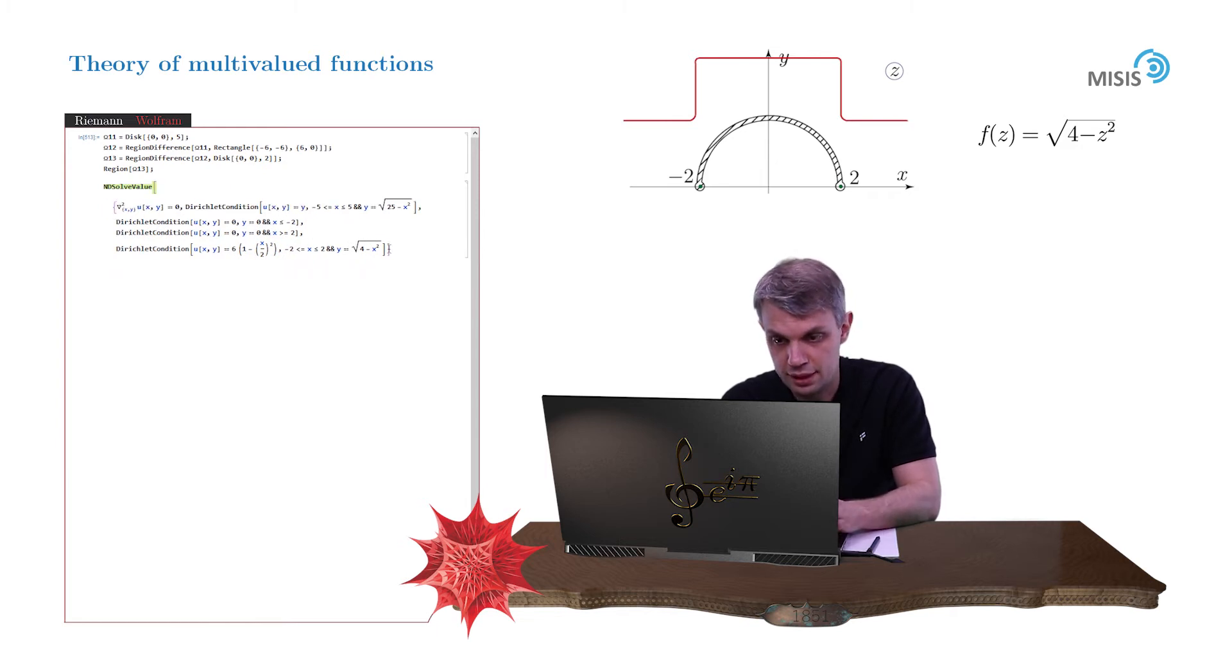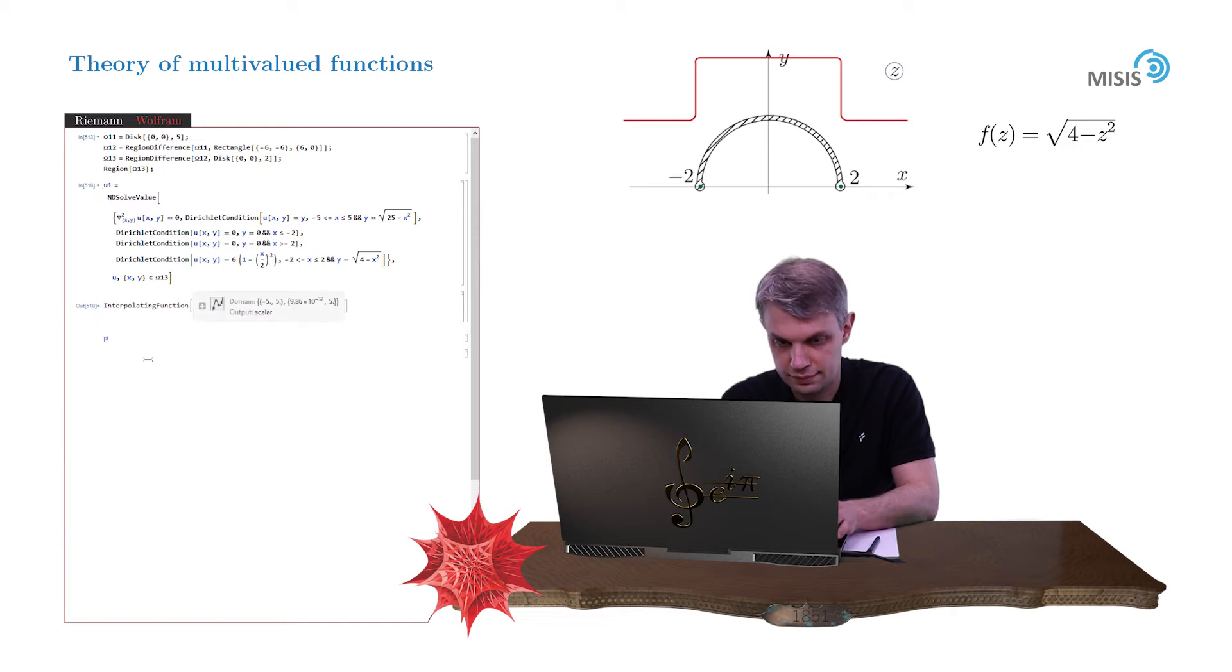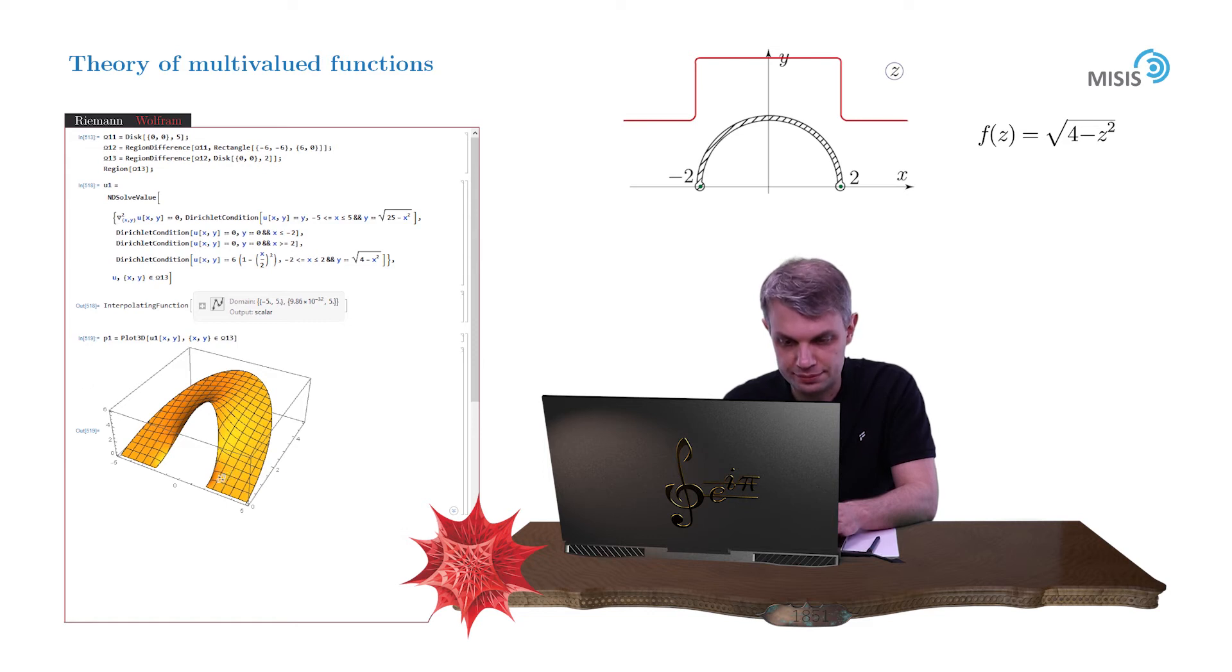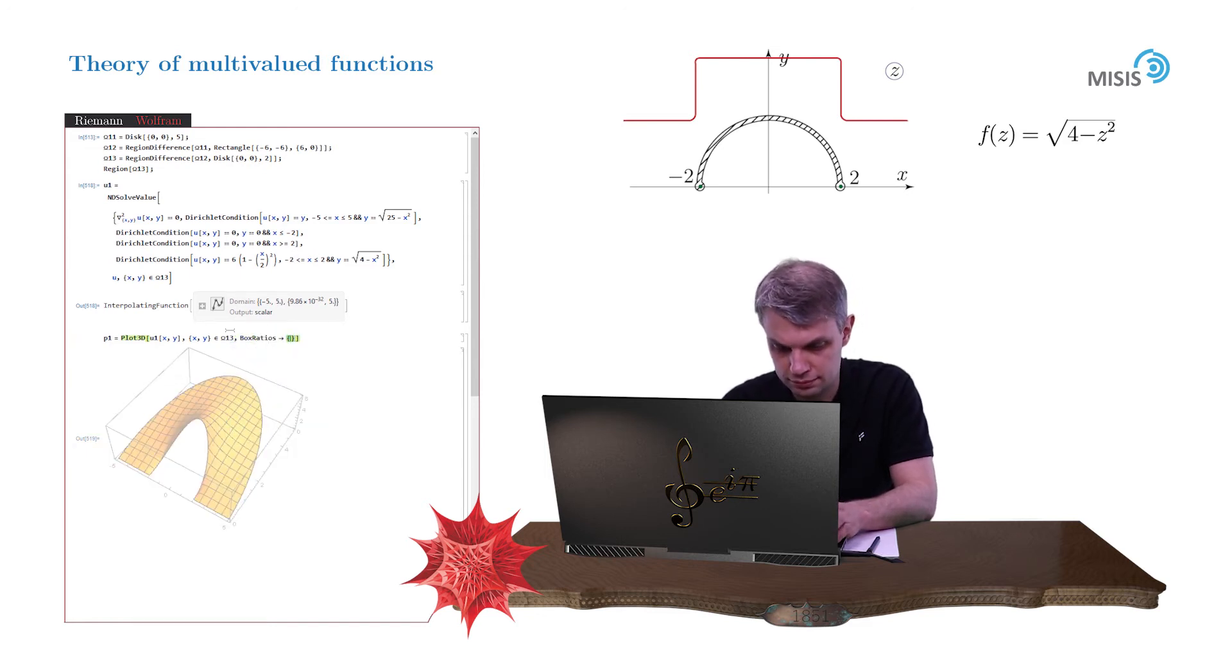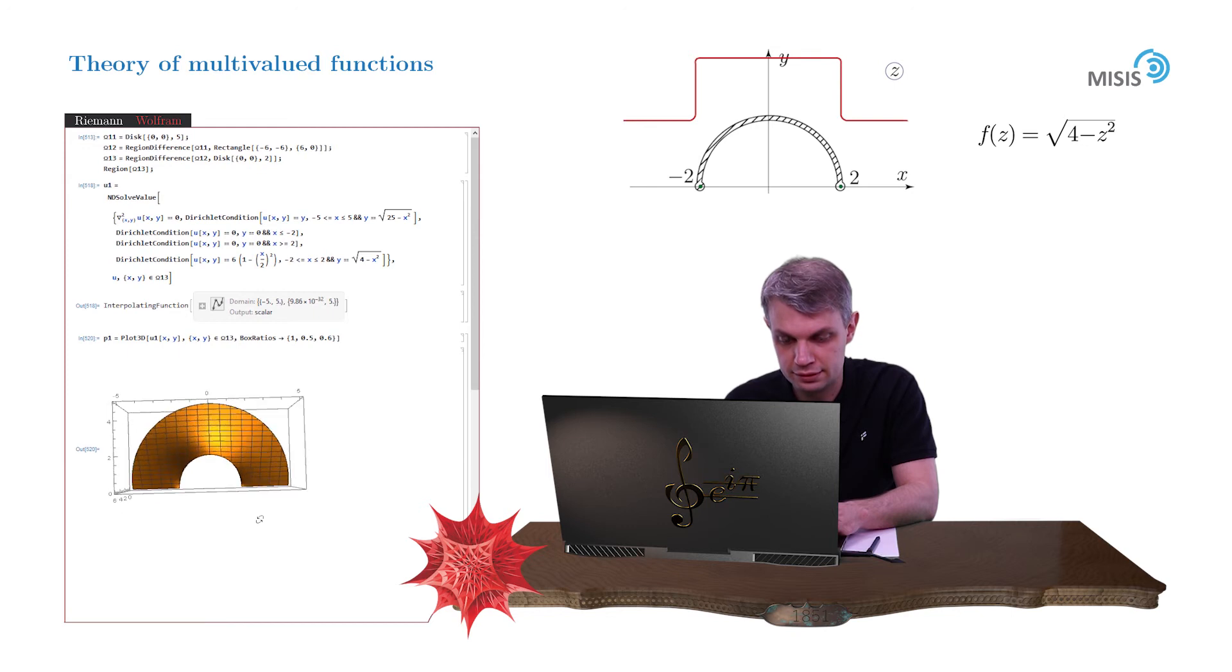So let's solve this equation for u function in our region. So here it is. And now let's plot this solution. So let's denote this function u1. And here we go. And here is our desired plot. And let me slightly correct the aspect ratio for you. So here is our upper half of the first Riemann sheet.